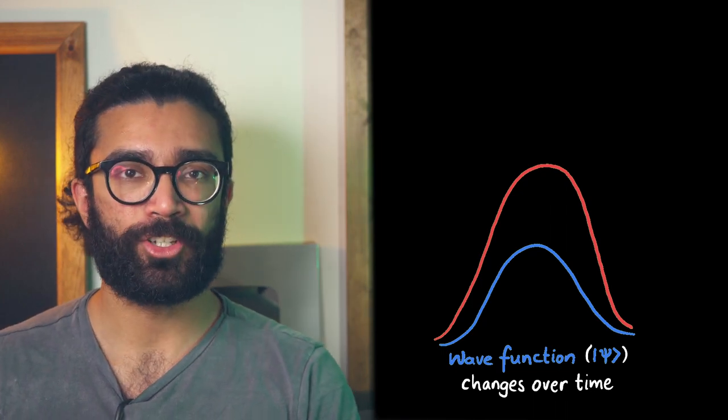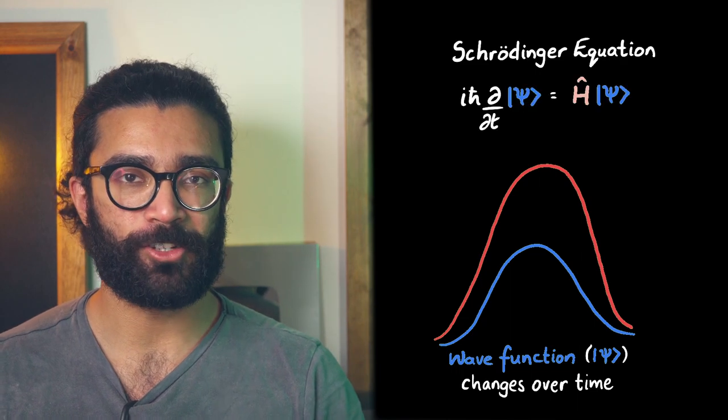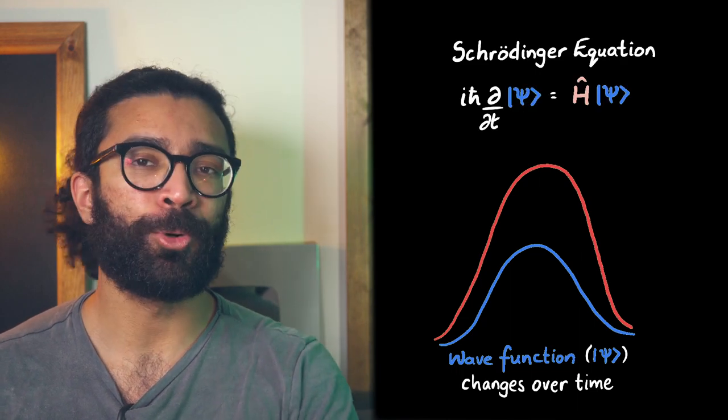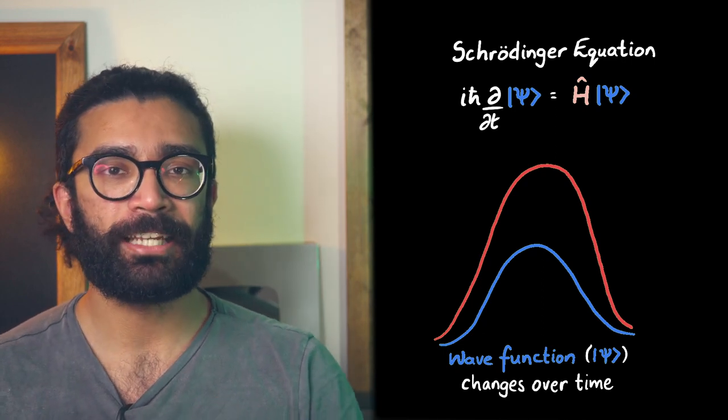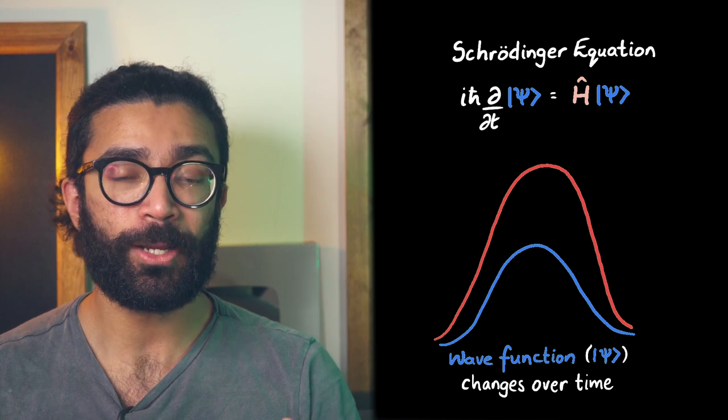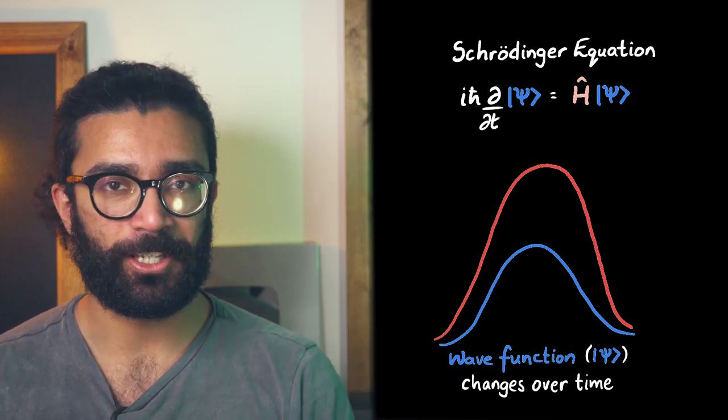How it changes or not is determined by the Schrodinger equation. This is the big important equation in the theory of quantum mechanics. I've made lots of videos about it, but if you want to get a detailed overview of the equation then please check out this video up here.